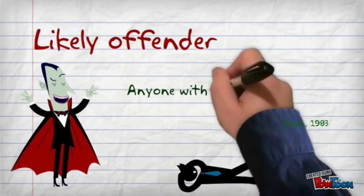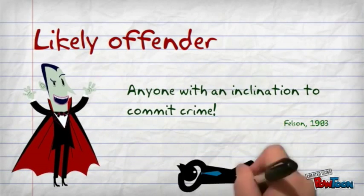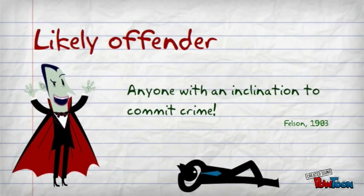A likely offender is one who has the propensity and ability to commit a crime. Their approach assumes a ready supply of likely offenders and does not focus on individual differences in the inclination to commit crime.